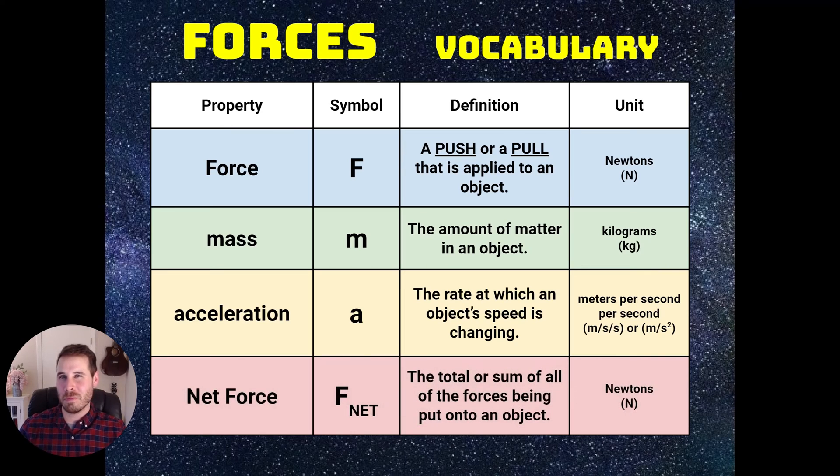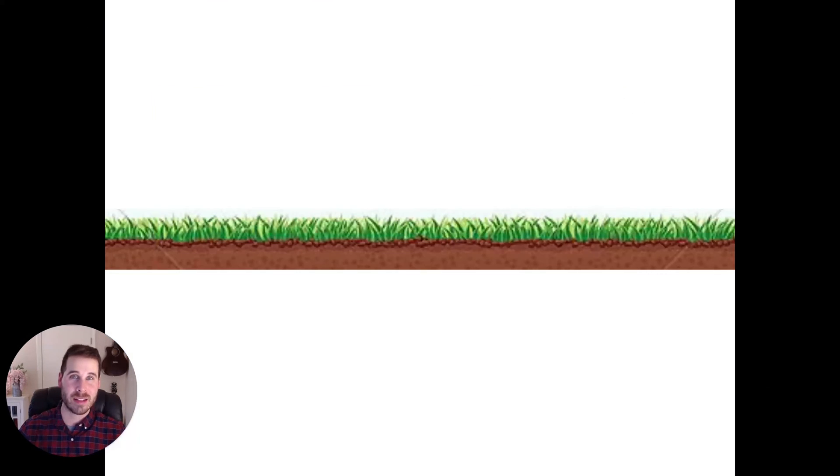Finally, there's this weird property called net force, which sounds like a different version of force, our first term. Net force is symbolized with a capital F and then a subscript NET. This is defined as the total or sum of all of the forces being put onto an object. And again, because it's a type of force, it's measured in newtons. We're going to talk a little bit about what net force means on the next slide.